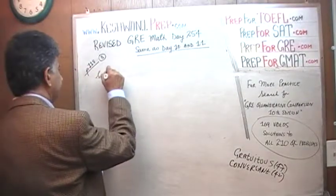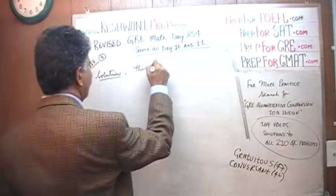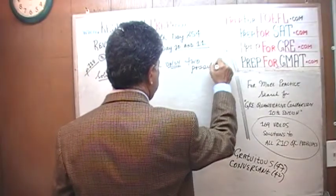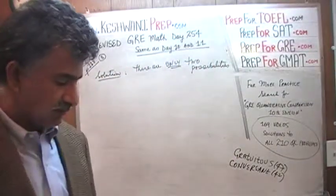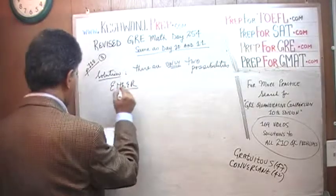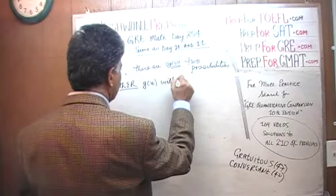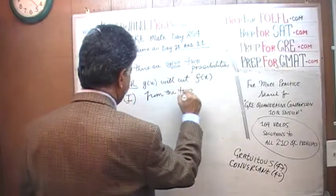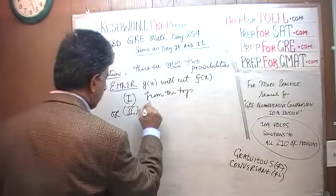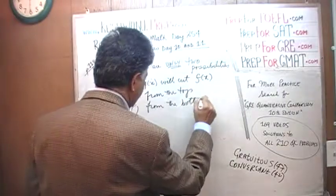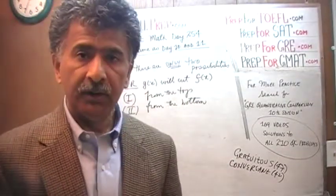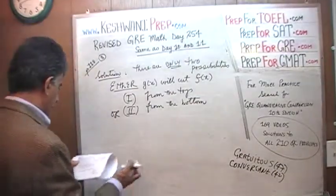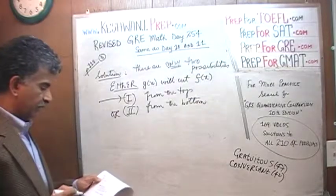Here is the solution. There are only two possible scenarios. Either g(x) will cut f(x) from the top, or from the bottom. Common sense dictates those are the only two possibilities. We are going to analyze both of these scenarios. Let's look at scenario 1, which is where we contemplate what happens if g(x) cuts f(x) from the top.